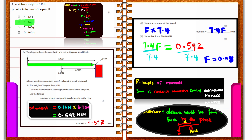In another question, a pencil has a weight of 0.16 newtons. To find the mass, use: weight equals mass times gravitational field strength, so mass equals W divided by g. Substituting: 0.16 divided by 10 gives 0.016 kilograms. Since the answer options are in grams, multiply by 1000 to get 16 grams, which is option B.